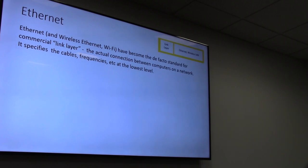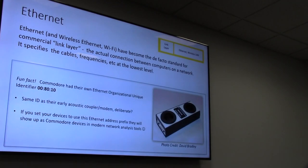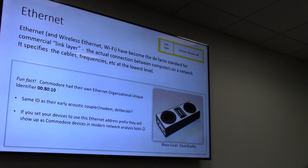Ethernet has become the de facto standard for networking — it covers the lowest layer: what is the lowest level of how you connect multiple computers together? Cables, frequencies, raw zeros and ones. Fun fact for the Commodore folks: Ethernet has a code called the Ethernet Organizational Unique Identifier, and Commodore had one. If you program your devices to use the code 00-80-10, which matches the product number of one of their modems, your Commodore devices show up as a Commodore device when using modern network analysis tools.